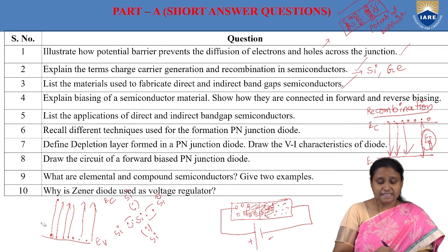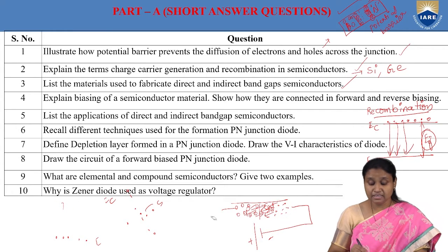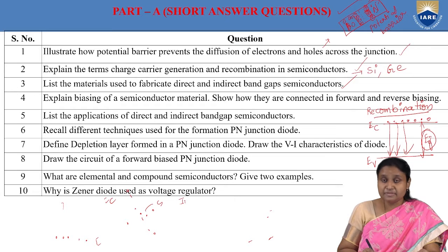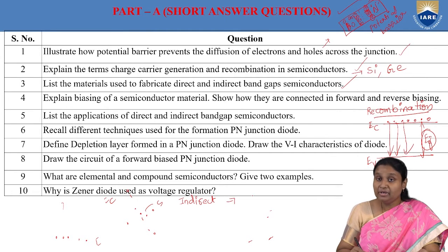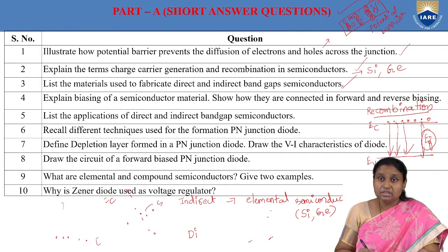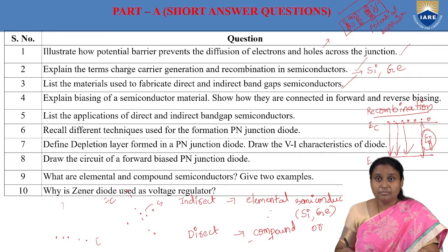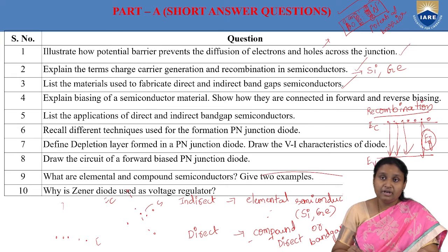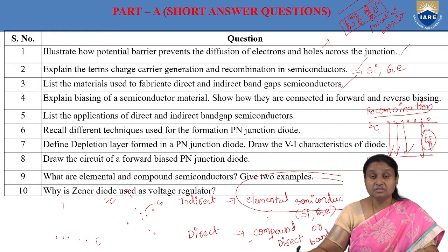Next question: list the materials used to fabricate direct and indirect bandgap semiconductors. For indirect bandgap semiconductors, we use elemental semiconductors — silicon and germanium. These elemental semiconductors belong to group 4 and consist of single-element atoms.